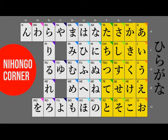Dalam pelajaran kali ini, kita hanya belajar huruf Hiragana dari a-gyou sampai ta-gyou. Dan ingat, dalam tahapan ini, kita masih belum masuk pada latihan menulis. Jadi, fokuskan untuk mengenali dan mengingat bentuk-bentuk huruf beserta bunyinya.